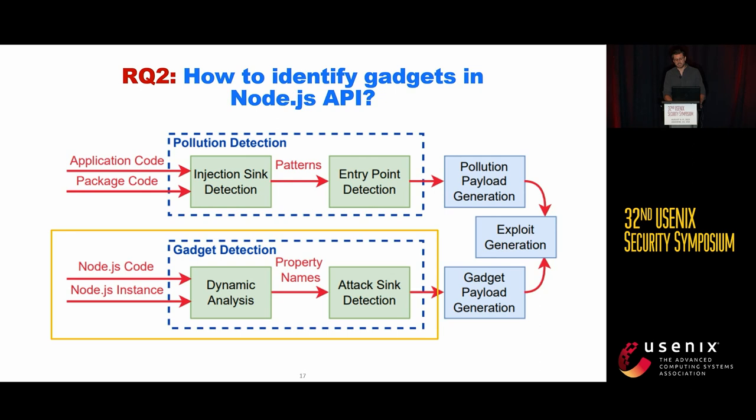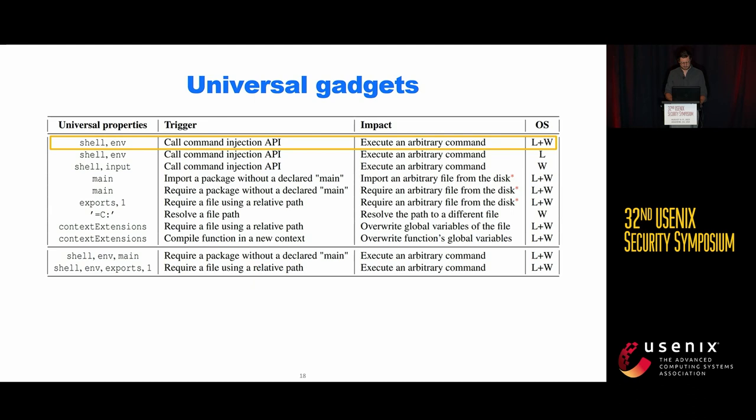The second research question is how to identify gadgets. We analyze Node.js code and use dynamic analysis to detect property reads from the object prototype. Then we use static analysis to find flows from property reads to internal Node.js function calls. You can find all details in the paper. In this presentation, I want to show some interesting results. We detected 11 different gadgets in Node.js.